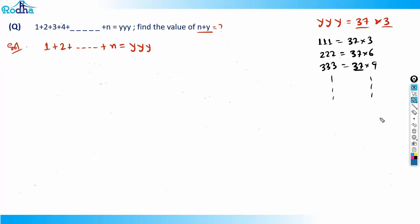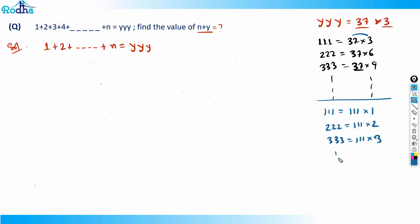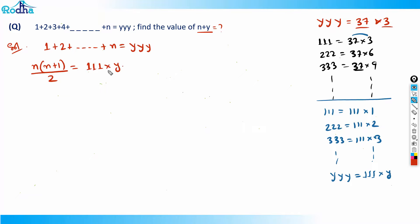So triple y is always a multiple of 37 and 3. We can write triple 1 as 37×3, and then triple y equals triple 1 times y, which is 111 times y. Using the sum formula, the sum from 1 to n is n(n+1)/2, and this equals 111 times y.